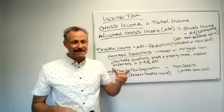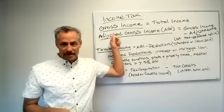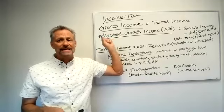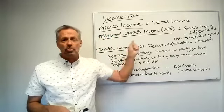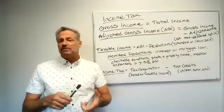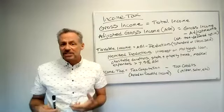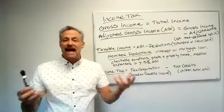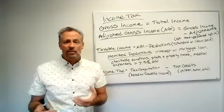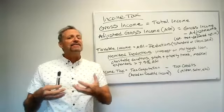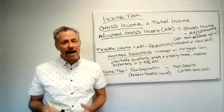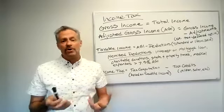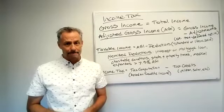So income tax is based on gross income. We start off with gross income, and that's the total income that you bring in — whether it's money from wages, tips, game show earnings, gambling winnings — any kind of income that you have is going to be lumped in, added together, and we're going to call that gross income.